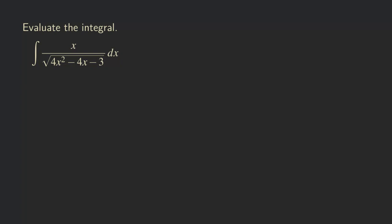We are going to start by writing the function with x at the top. For the denominator, whatever is inside the square root, we should factor out the 4 because we don't want this leading coefficient in front of the x-squared — we want a 1 instead of a 4. So we are going to factor the 4 from all the terms, giving us 4 times (x-squared minus x minus 3 over 4) inside the square root.